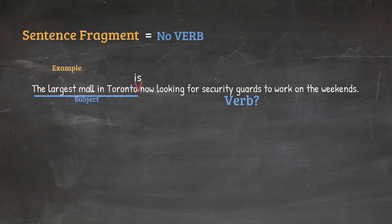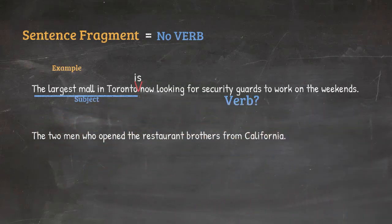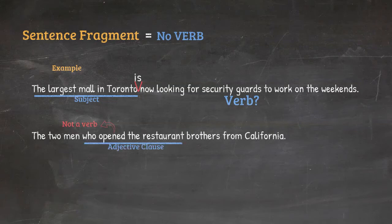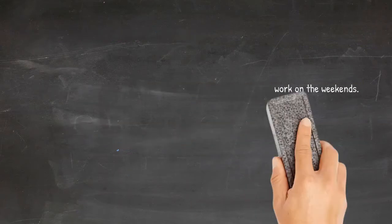Or this one: 'the two men who opened the restaurant brothers from California.' Here it may appear that there is a verb — 'opened' — but that is actually just part of the adjective clause. In other words, 'who opened the restaurant' just describes the brothers. The verb is still missing. The verb should be after 'restaurant,' as in 'the two men who opened the restaurant are brothers from California.'